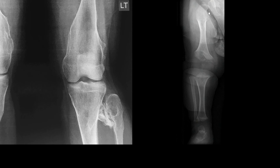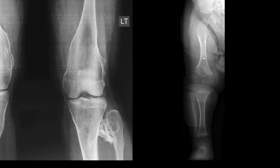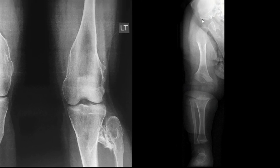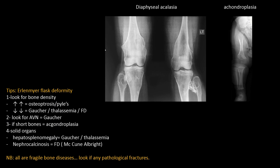In achondroplasia we can see rhizomelic shortening of the femur and widening of the metaphysis. There is also a long fibula extending above the tibial plateau, a V-shaped growth plate, and in the pelvis a horizontal acetabular roof, small squared iliac bone, and narrow sciatic notch.